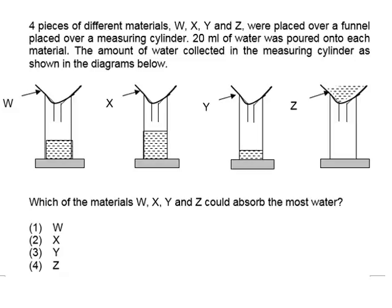Next question, four pieces of different materials W, X, Y, and Z were placed over a funnel and this funnel is also placed over a measuring cylinder. 20 milliliters of water was poured into each material and the amount of water collected in the measuring cylinder as shown in the diagram below.